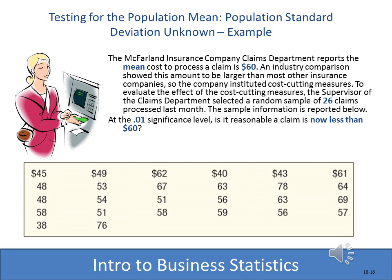Let's go through an example using the t statistic for hypothesis testing. An insurance company reports the population mean cost to process a claim is 60. They've done a sample of 26 claims and at the 0.01 significance level want to know: is it reasonable to claim the processing cost has changed from 60 — specifically, is it less than 60? The null hypothesis is that it's not less than 60 — that is, greater than or equal to 60. The alternate hypothesis is that it is less than 60.